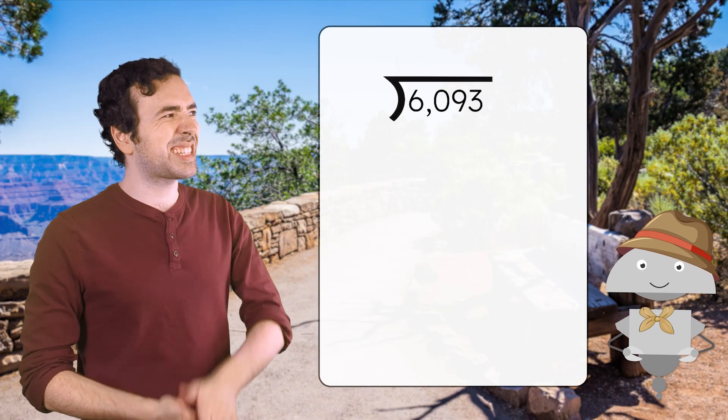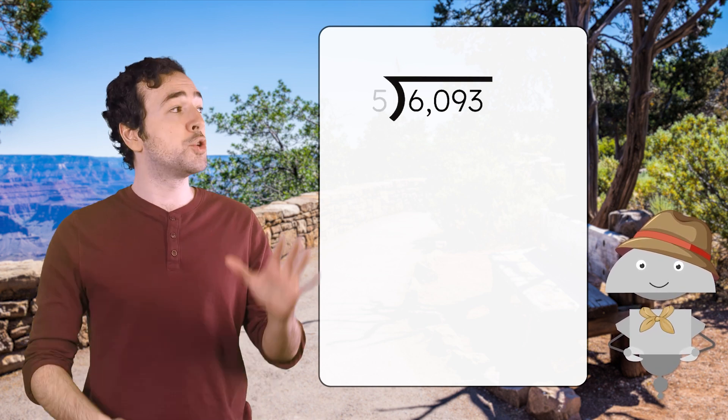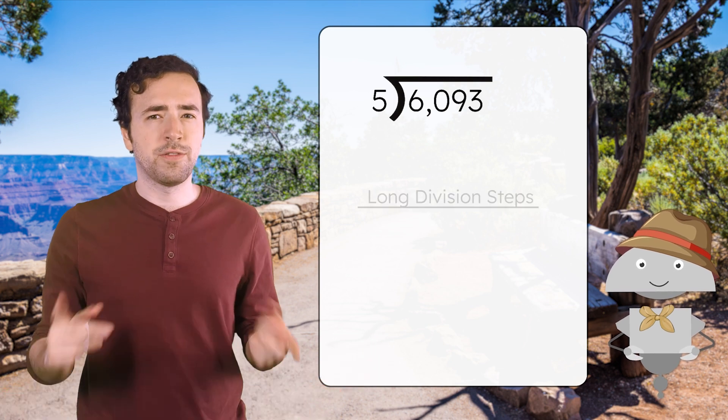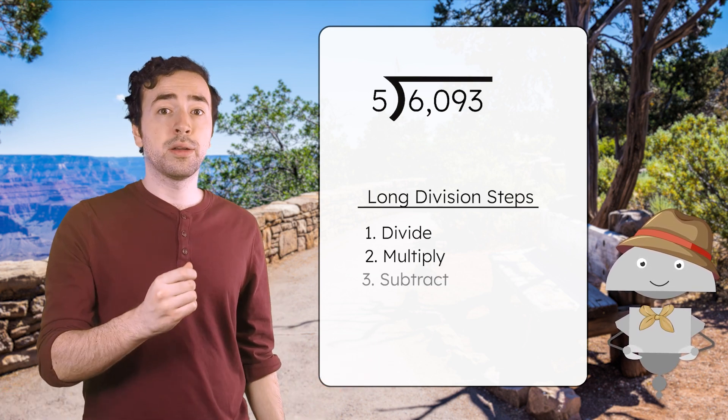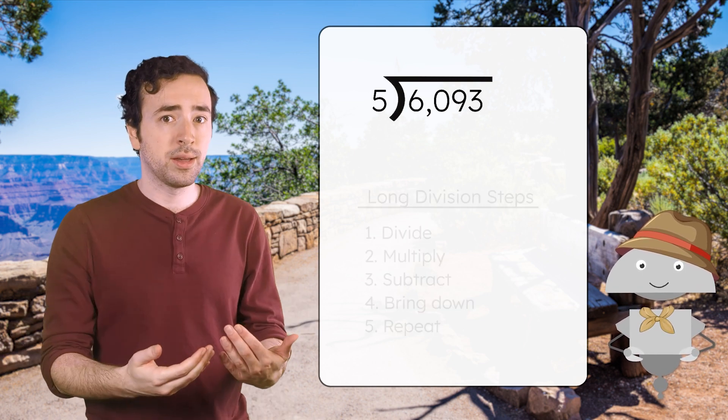The canyon is 6,093 feet deep. We'll break the descent into five equal sections so we can stop and take a breather as we hike. Following the long division steps, we'll divide, multiply, subtract, bring down, and repeat.